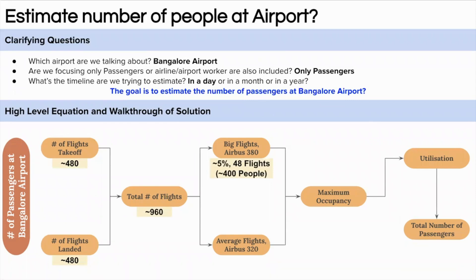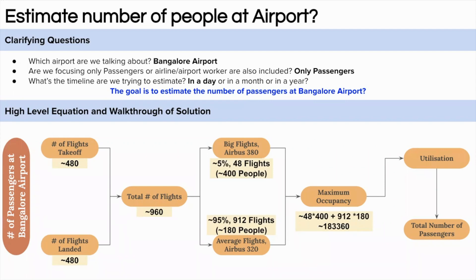Let's assume 5% of the flights are big, which comes to around 48 big-size flights with a capacity of around 400 people. The remaining 95% — around 912 flights — are average-sized with a seating capacity of around 180 people. The total number of passengers at 100% occupancy would be around 183,000, calculated as (48 × 400) + (912 × 180). On average, we assume 80% occupancy — this can reach 95–98% in peak season, but on average it's 80%. Multiplying 183,000 by 0.8 gives approximately 146,000.